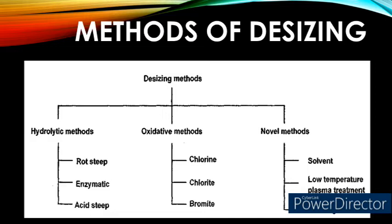Under hydrolytic methods there are three different methods: number one, rot steeping — one of the oldest methods; number two, enzymatic desizing; and number three, acid steep desizing. Under oxidative methodology, there are three methods: number one, chlorine desizing; number two, chlorite desizing; and number three, bromide desizing. Under novel methods, there are three methods: number one, solvent desizing; number two, low temperature plasma treatment desizing; and number three, desizing 2000.